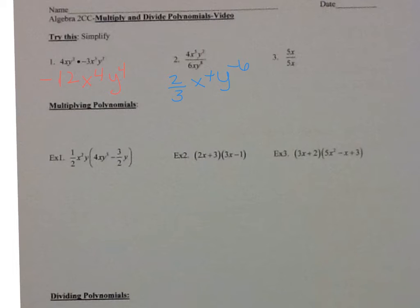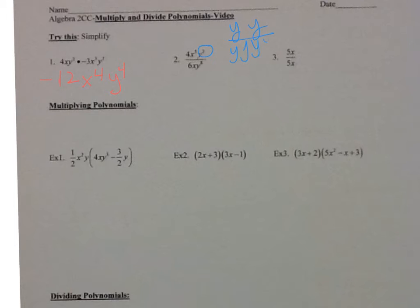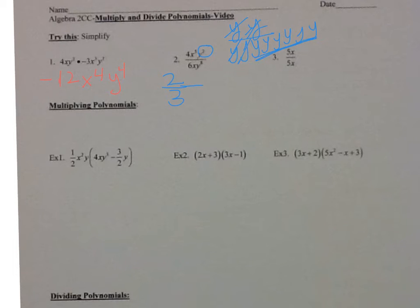Negative exponents should go into the denominator. Look at the y's: I have y to the second on top, that means 2 y's on top, and 8 y's on the bottom. So if these two cancel out, I'm left with 6 y's in the denominator. So I have 4 over 6 reducing to 2 thirds, x to the fifth divided by x to the first is x to the fourth in the numerator, and y to the sixth in the denominator.